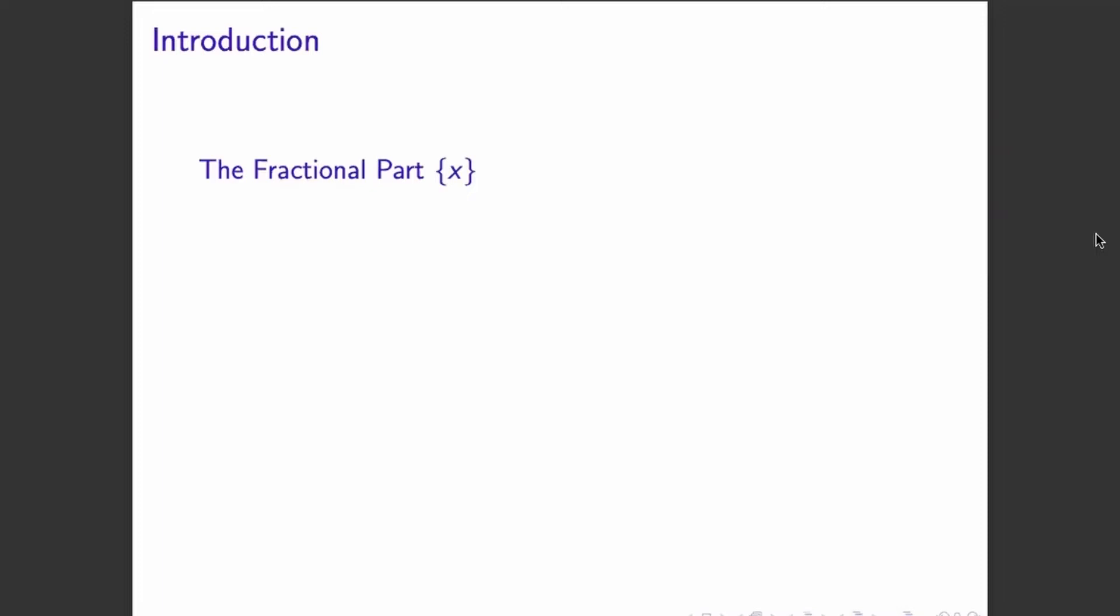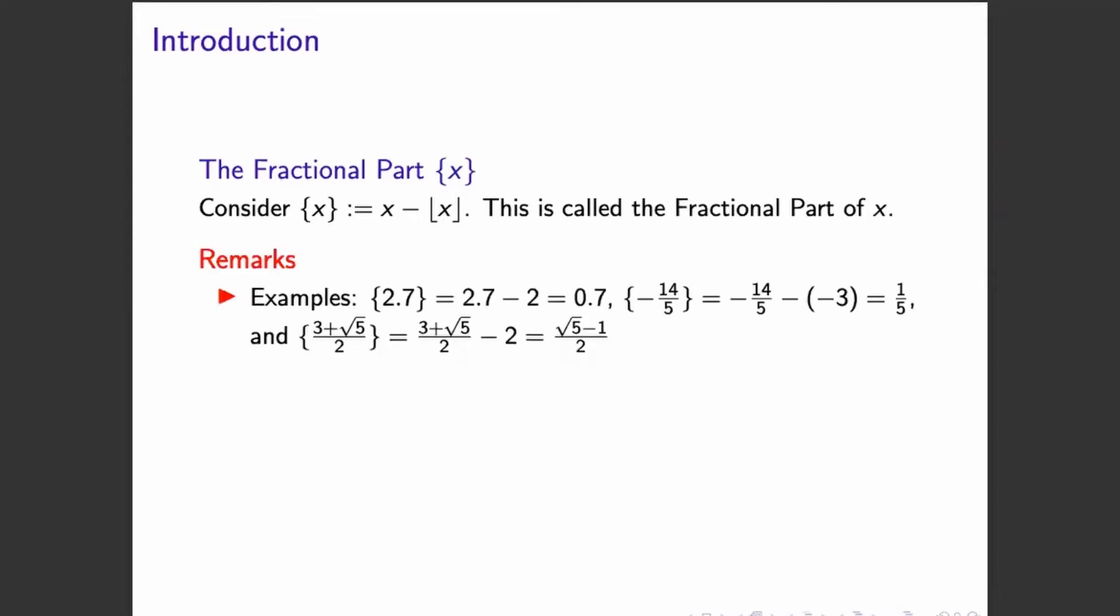So if we have a real number X, we can isolate its fractional part by removing or subtracting away its integer part. So for example, the fractional part of 2.7,